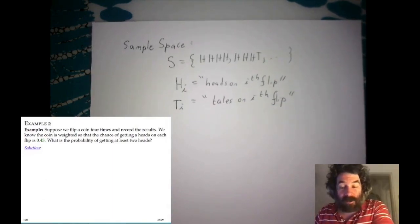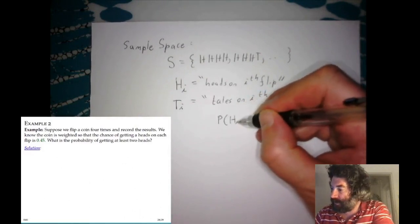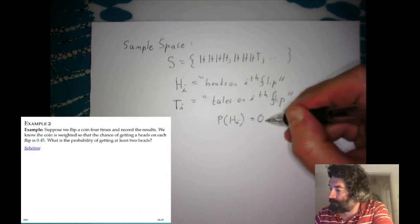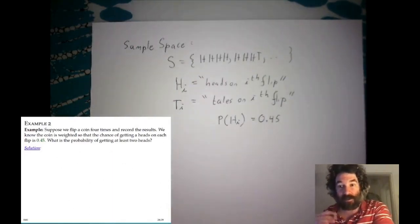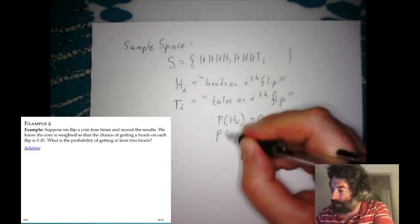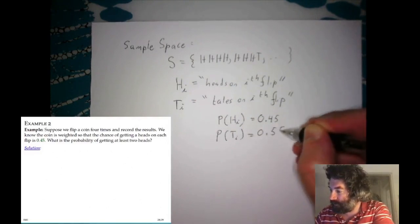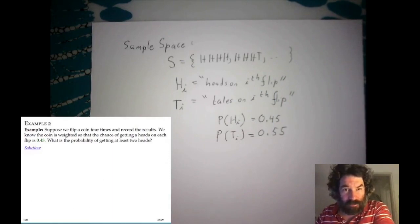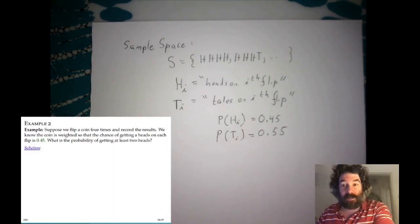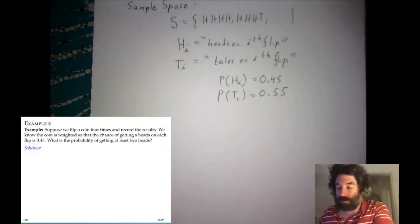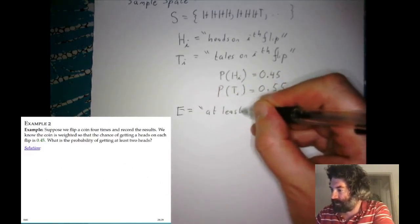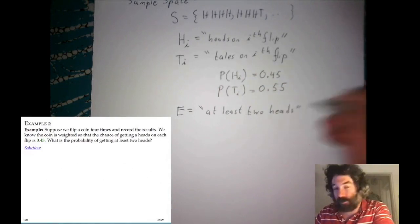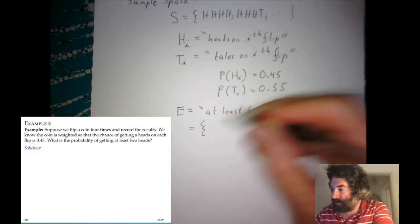The information about the unfair coin tells us that the probability of H_i is 0.45 for all i, and the probability of T_i must be 1 − 0.45 = 0.55, since the probabilities must add to one. The event we want to find the probability for is getting at least two heads — let's call it E. Let me write down all the outcomes that have at least two heads.